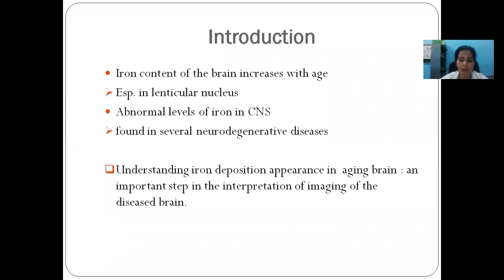Many studies have linked increased brain mineralization with several neurodegenerative diseases like Parkinson's disease, Alzheimer's, Huntington's, and dementia. That is why understanding the appearance of iron deposition in the aging brain is an important step in the interpretation of imaging in the diseased brain.